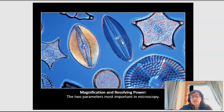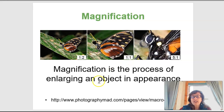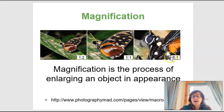Two parameters we look at in microscopy are magnification and resolving power. Magnification is simply enlargement — enlarging an object so we can see some of its features better. You do this with your cell phones and iPads all the time. Here you can see the ratio at which we are magnifying the same butterfly in each of these images.